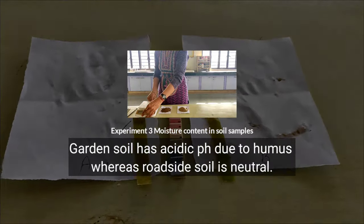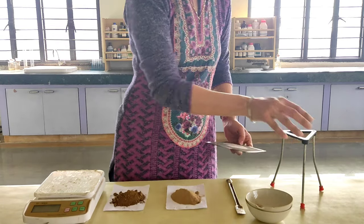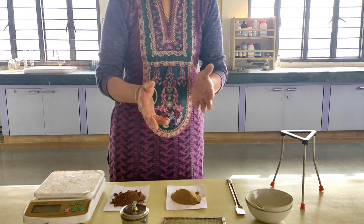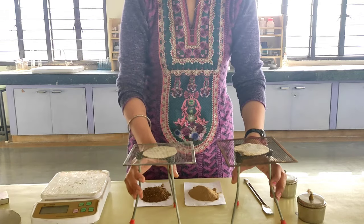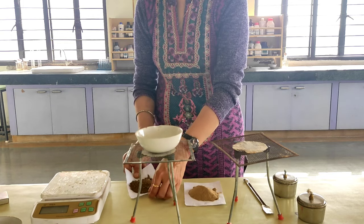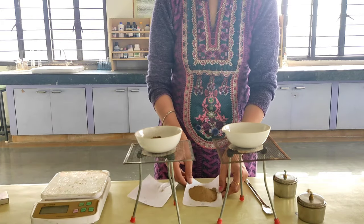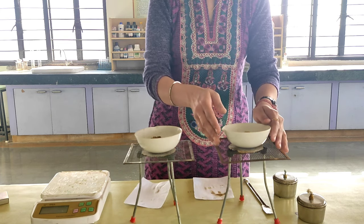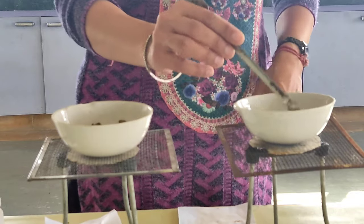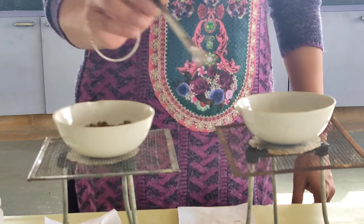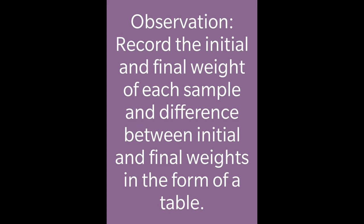Now experiment number three. For this experiment we have again taken two different soil samples — sample A and sample B. The requirements are a tripod, wire mesh, crucibles, and a spirit lamp. We take 50 grams each of sample A and sample B, pour them into crucibles, adjust them on the tripod, and heat them with spirit lamps for some time while stirring.